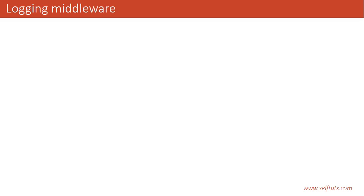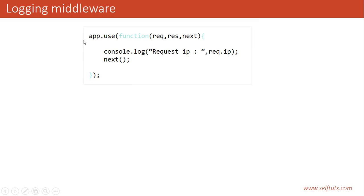So we'll write our logging middleware using `app.use` with an anonymous middleware function that accepts three arguments: request, response, and next. We'll write `console.log('Request IP is:', request.ip)`. Inside the request object, we can access the IP address from where the request is coming using `request.ip`. Then we'll call the next function, because we need to carry on the request-response lifecycle so the request proceeds to the next middleware.